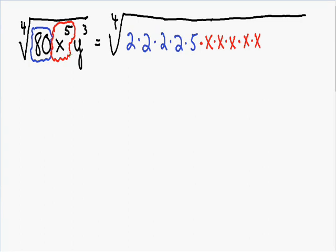We can do the same exact thing with our y term. Our y cubed is just y multiplied by itself three times. So we have one, two, three y's.